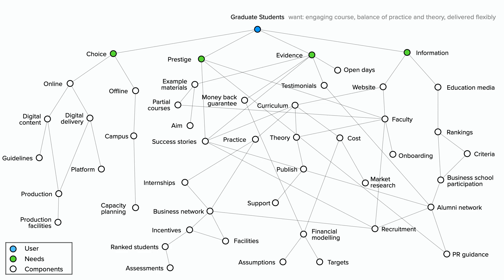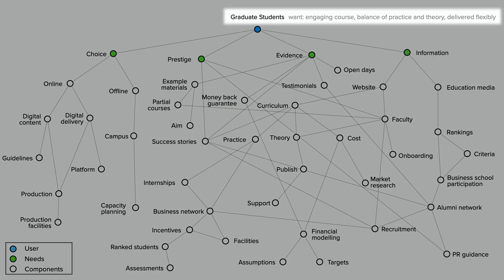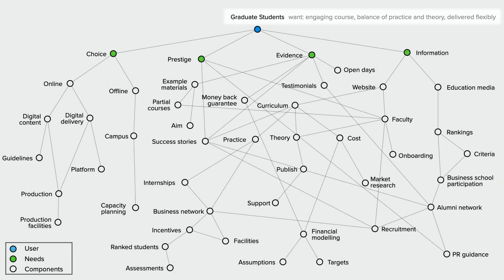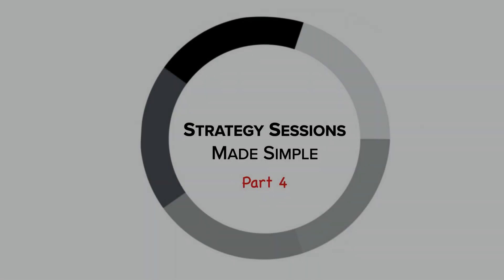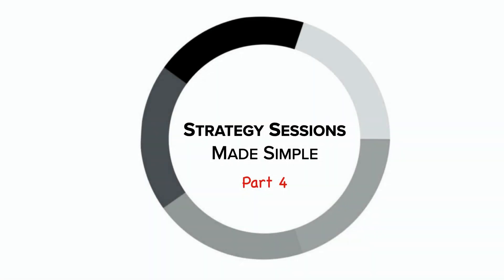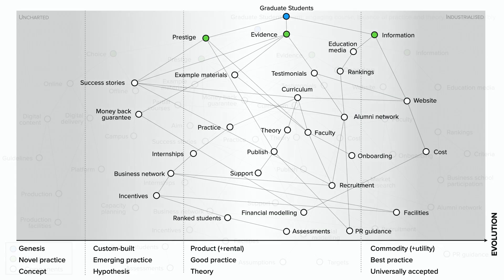In earlier videos we identified all the steps our industry performs to satisfy the desires of prospective graduate students. It looks messy, doesn't it? And the reason why it's so messy is that reality is messy. But instead of trying to simplify and dumb down this reality, we're going to accept the messiness and focus on increasing our awareness of what's going on and where our options for action are. Part 4 of Strategy Sessions Made Simple will show you how to start doing that as we turn this mess into a map.